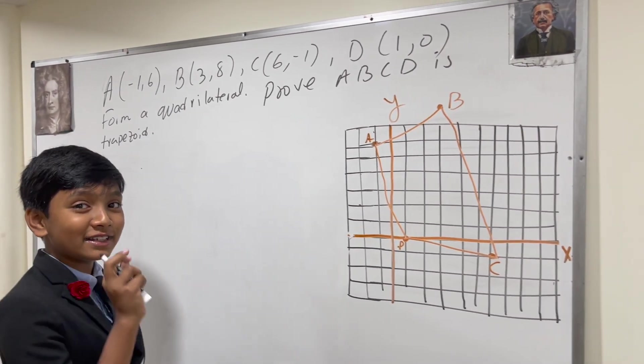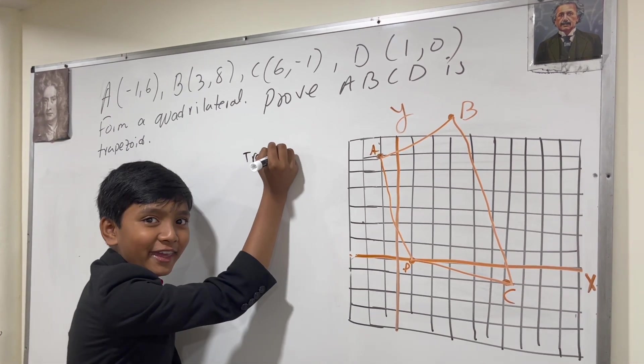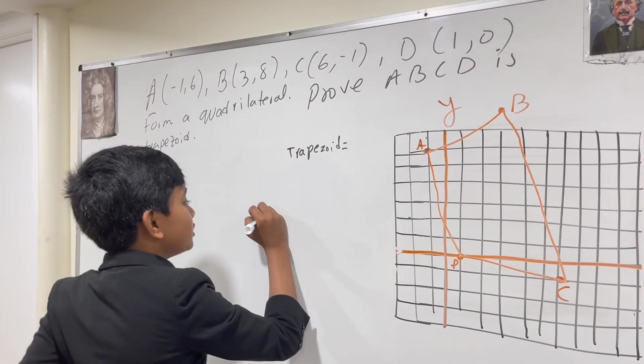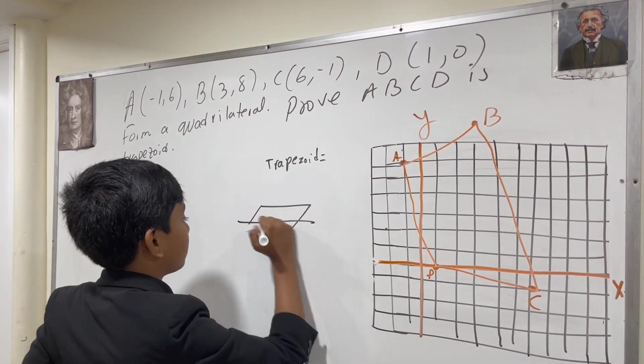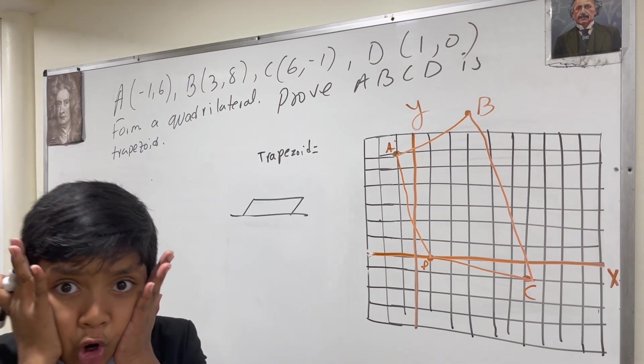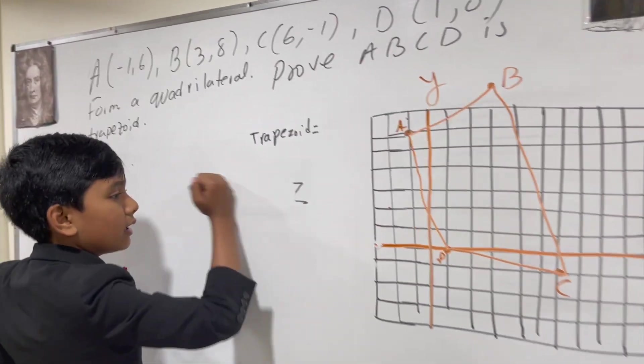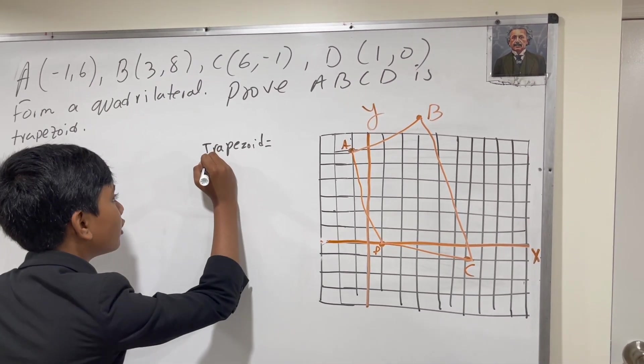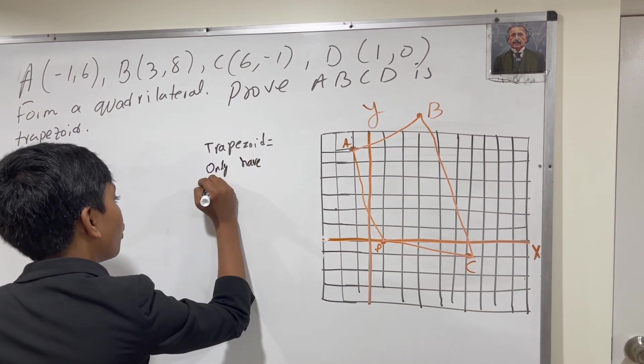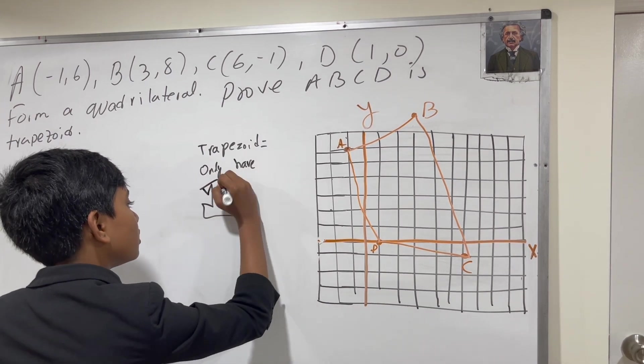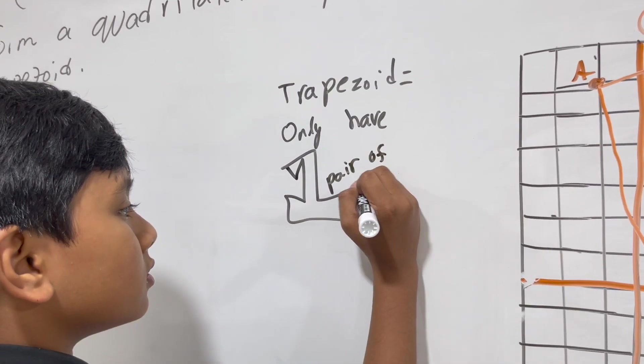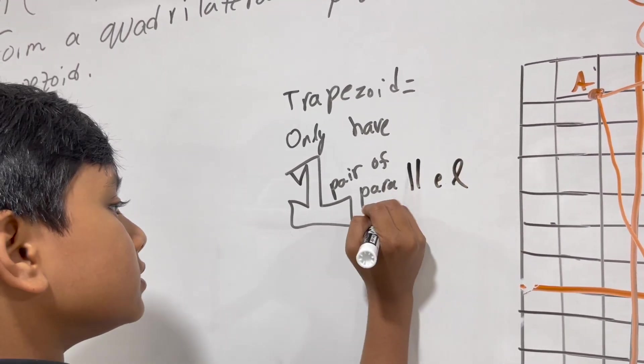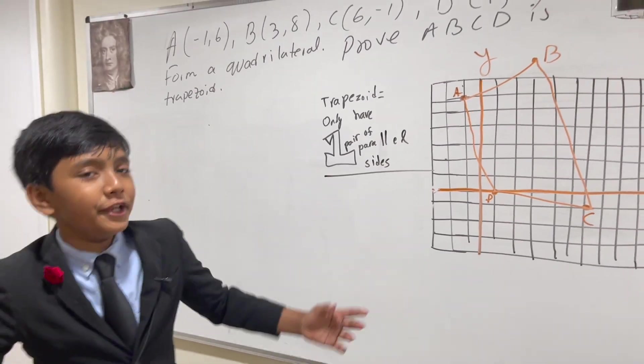Anyway, now we have to prove that this is a trapezoid. What is the definition of a trapezoid? Well, trapezoid is when you have a parallelogram, but it's half. No, it's not a half parallelogram. It's not like you cut a parallelogram in half. If you cut a parallelogram in half, you get another parallelogram! So instead, trapezoids go like this. They only have one pair of parallel sides. Okay, so now we know what a trapezoid is.